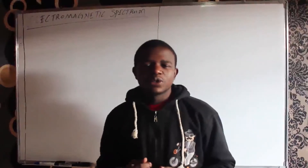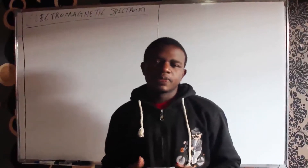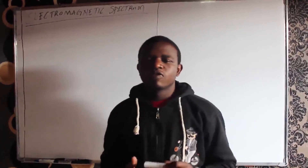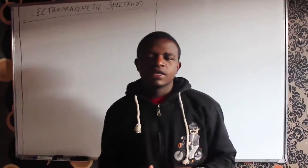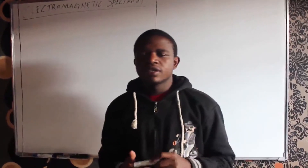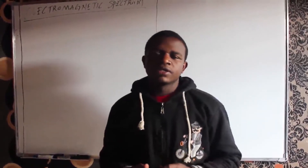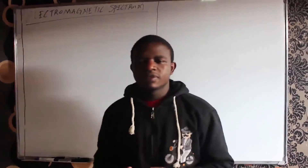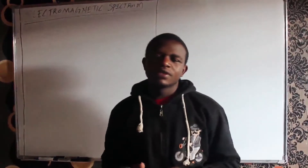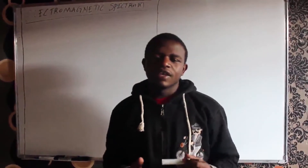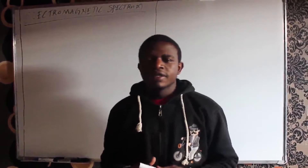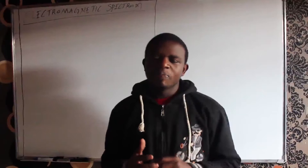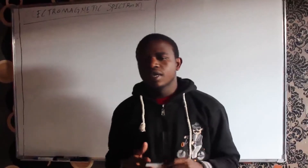The next thing we're going to talk about is the electromagnetic spectrum. The electromagnetic spectrum consists of waves that have different wavelengths, starting from radio waves to gamma rays. Some of the electromagnetic waves that we use in our daily lives include radio waves, microwaves, and infrared. X-rays and gamma rays also form part of the electromagnetic spectrum.